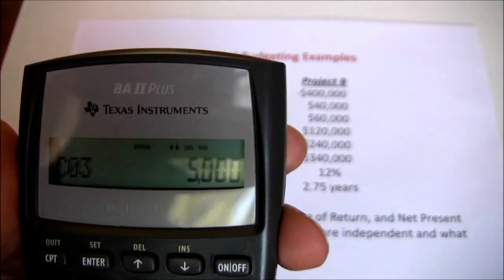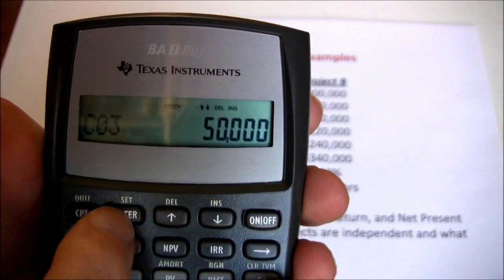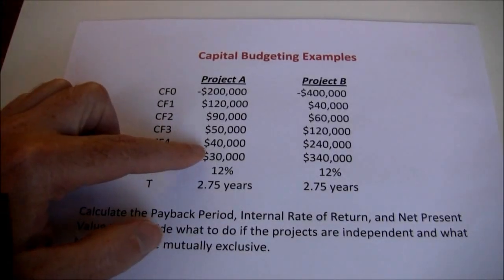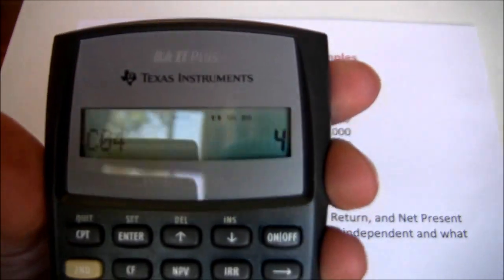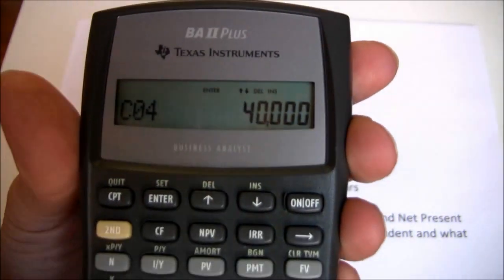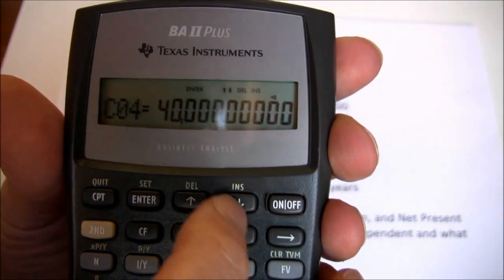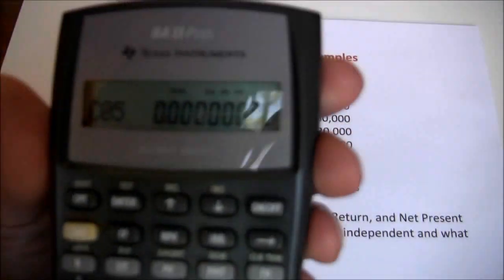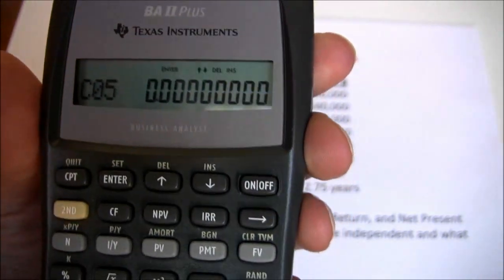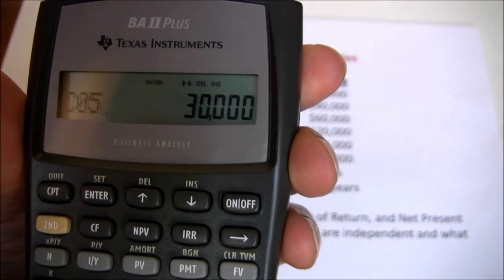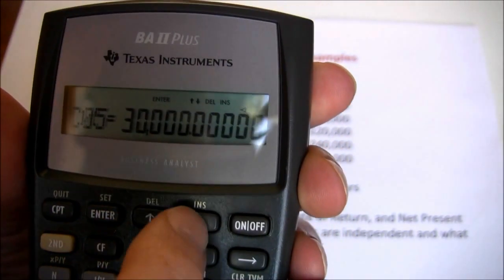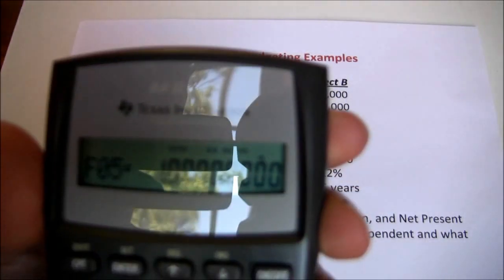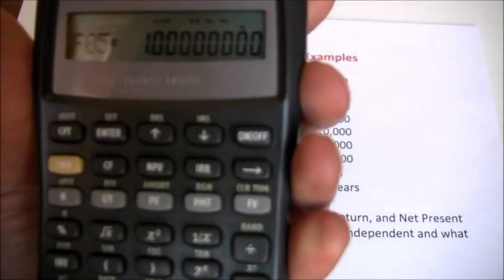So now we're ready for cash flow 3 — that's where we put the $50,000 in. Enter, down, down. Cash flow 4 is $40,000. Enter, down, down. Our last cash flow is $30,000. Put that in, down. Our frequency is 1 — everything is set up and we've got all our cash flows in.